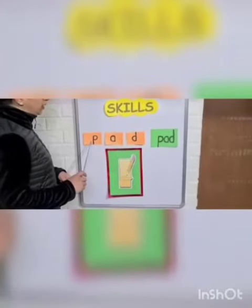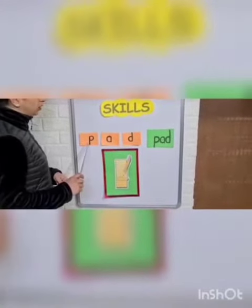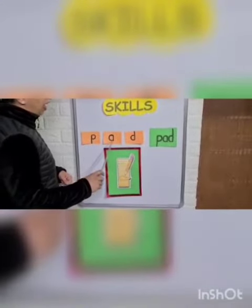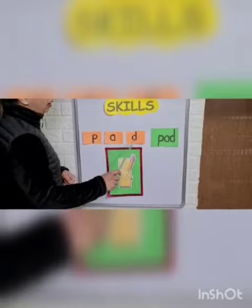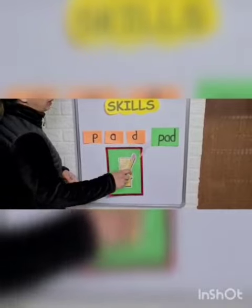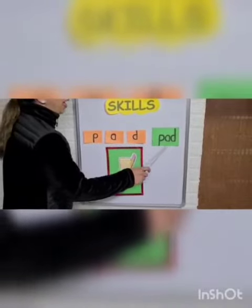Which letter is this? This is lowercase letter P. And this is lowercase letter A. Lowercase letter D. So let's start with sounds. P, A, D. Pad.